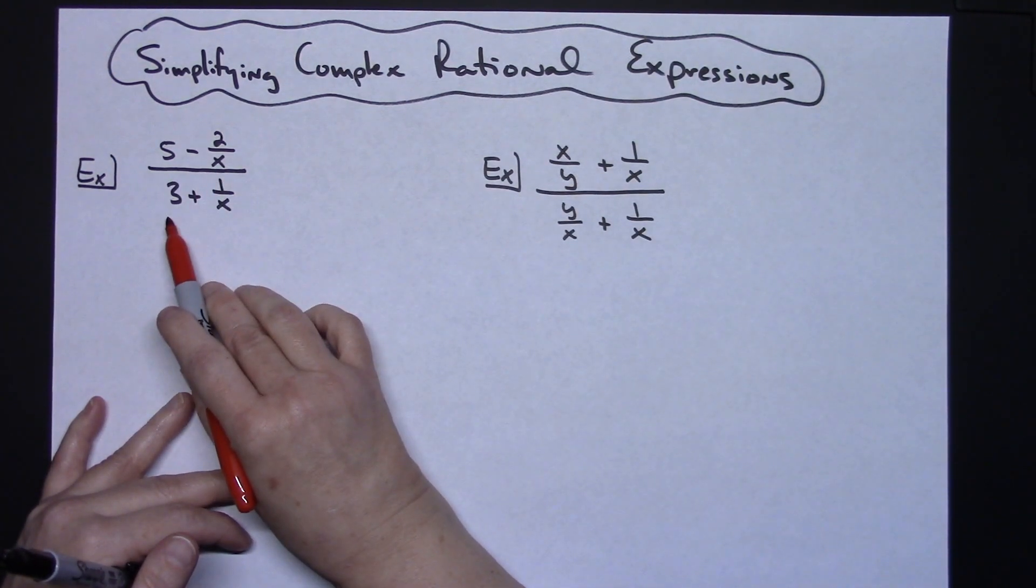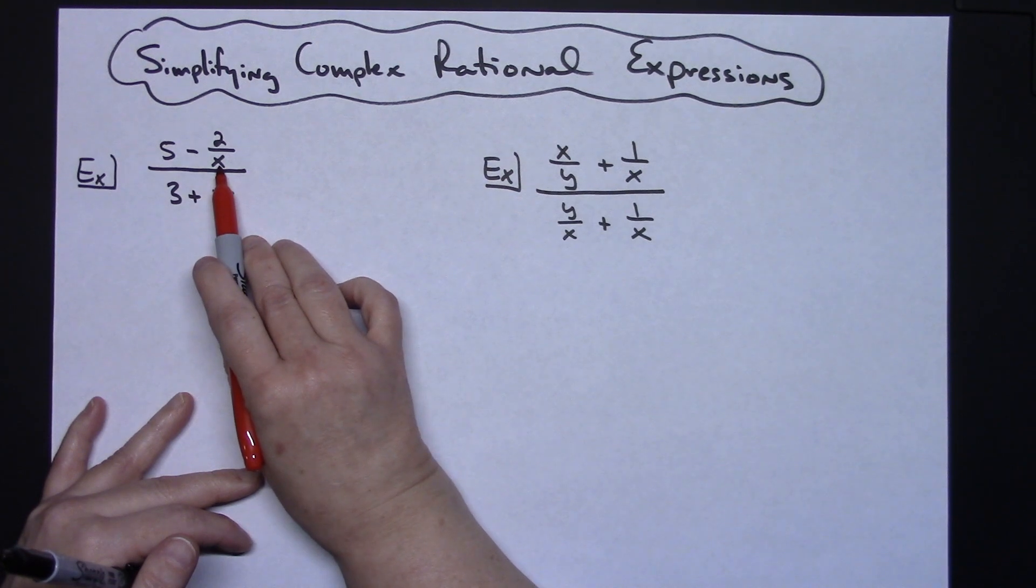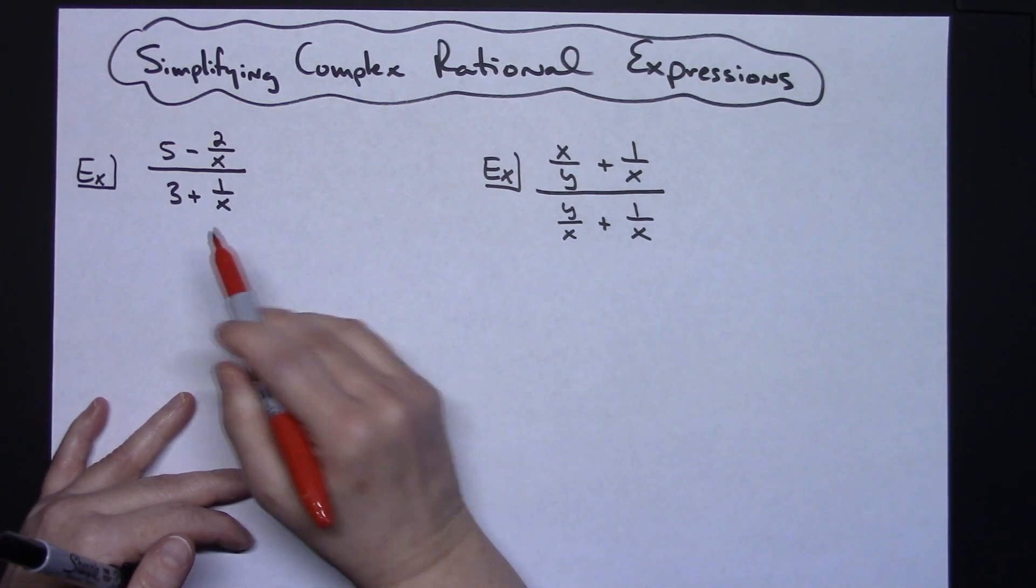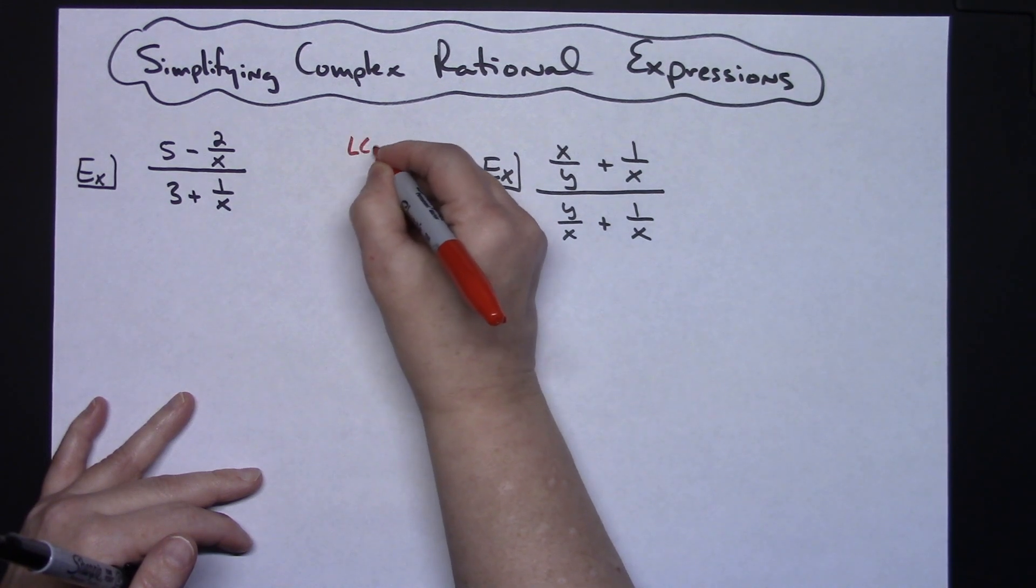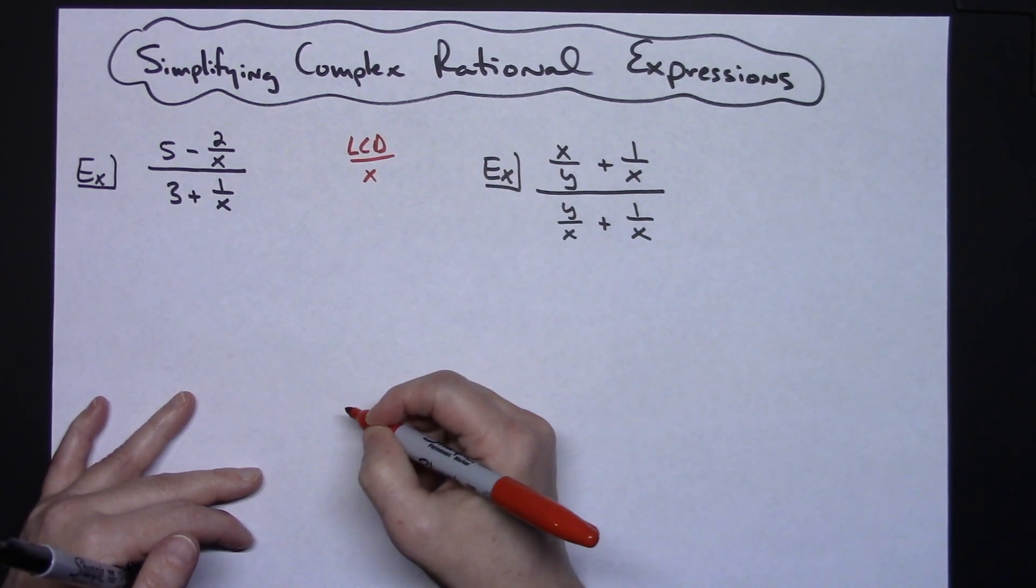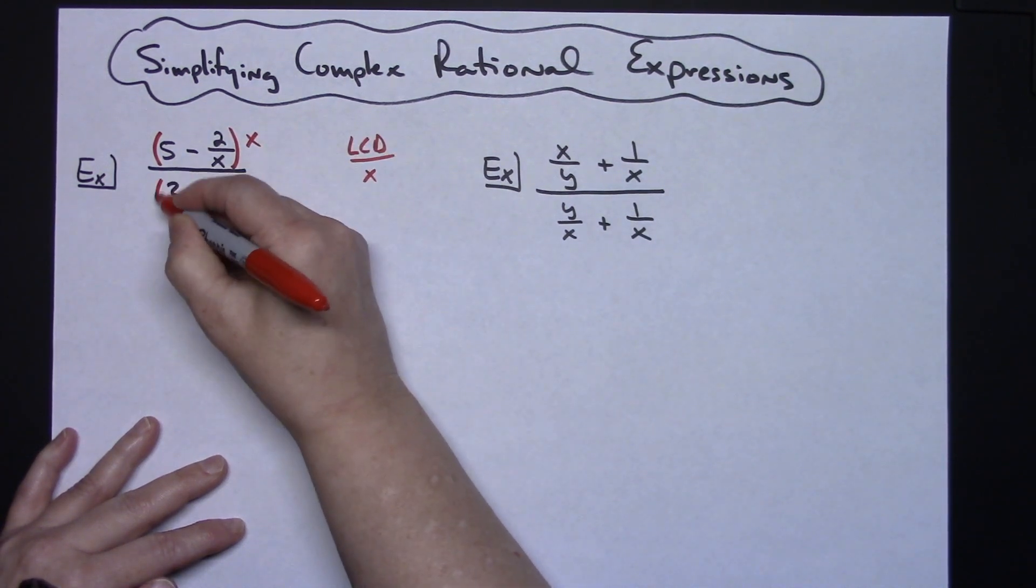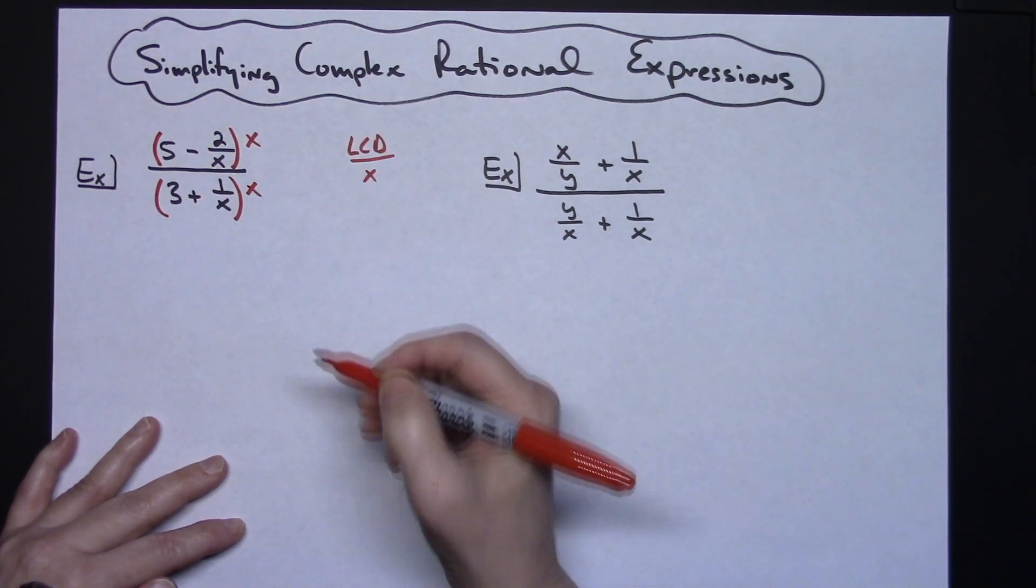So I'm going to look at all of my denominators: denominator of 1 and a denominator of x, a denominator of 1 and a denominator of x. So on this one that makes my least common denominator an x. So I'm going to multiply the top by x, I'm going to multiply the bottom by x.